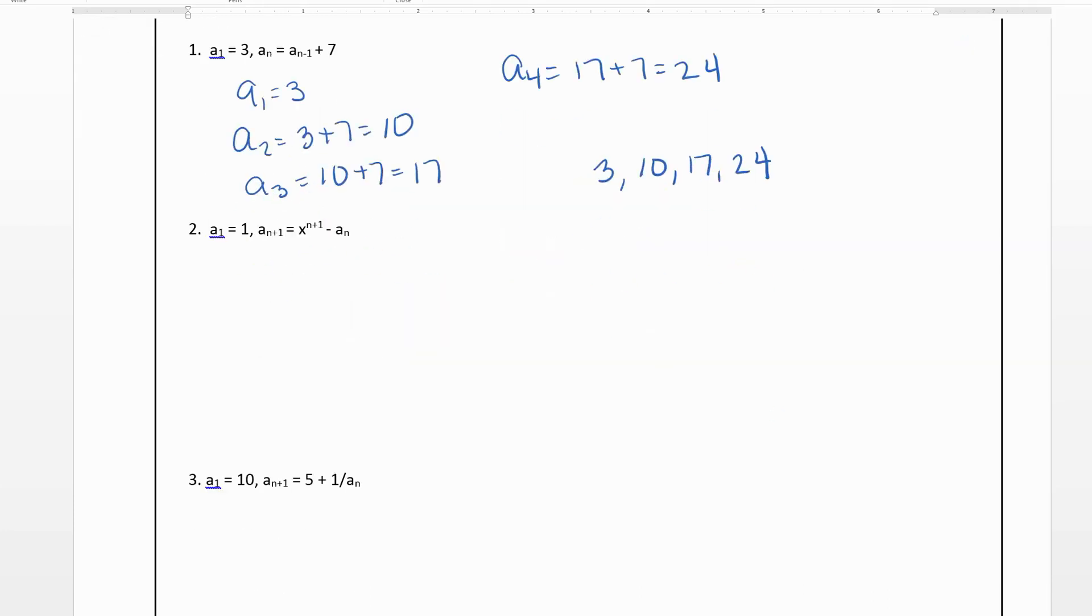Now, this next one, it says our first term is 1, and it says for the next term, you're going to take, so a₂, which would be a₁ plus 1. So we're going to take x, notice these two match, so this will be 2, minus our previous one, which is just 1. So our term is actually x² minus 1.